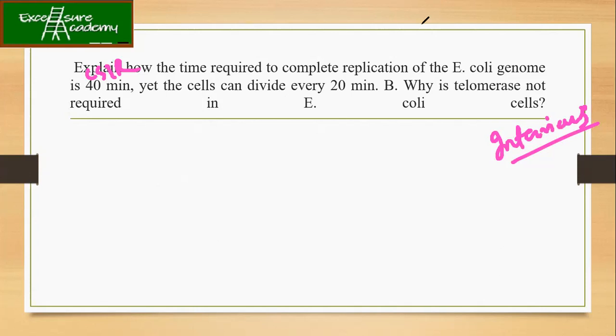It is because it initiates the replication before it is completing the first round of replication. In the case of E. coli, it re-initiates the replication before the first one is completed. Now under these conditions, the time required for cell division can be less, like around 20 minutes. I hope you remember the figure.